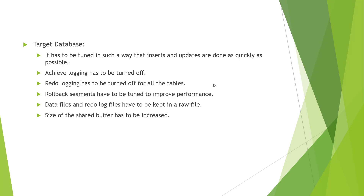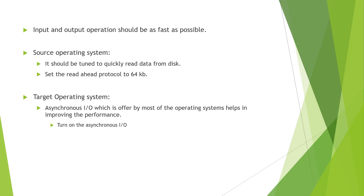The size of the shared buffer has to be increased. Also, we can do something for the source operating system and the target operating system. The source operating system has to be tuned in such a way that data is read quickly from the disk. For this, the read-ahead protocol has to be set to 64 KB — usually it is somewhere between 4 to 8 KB, so we'll have to make it 64 KB. This improves the performance.